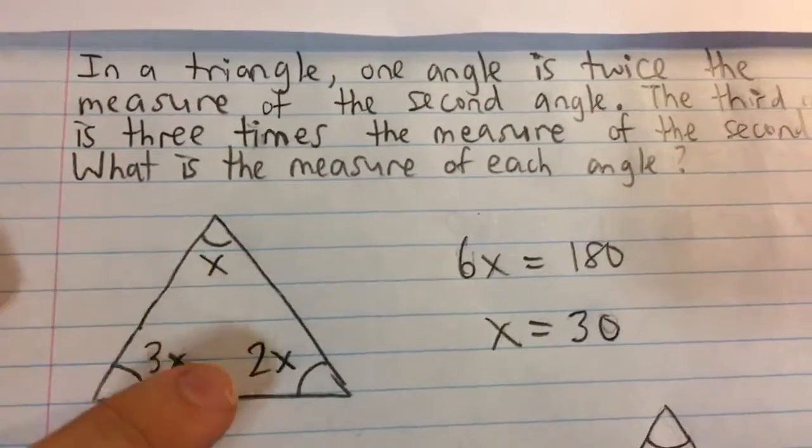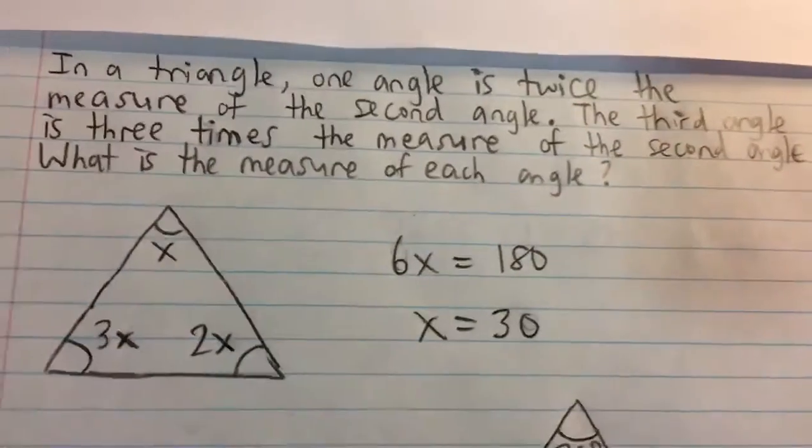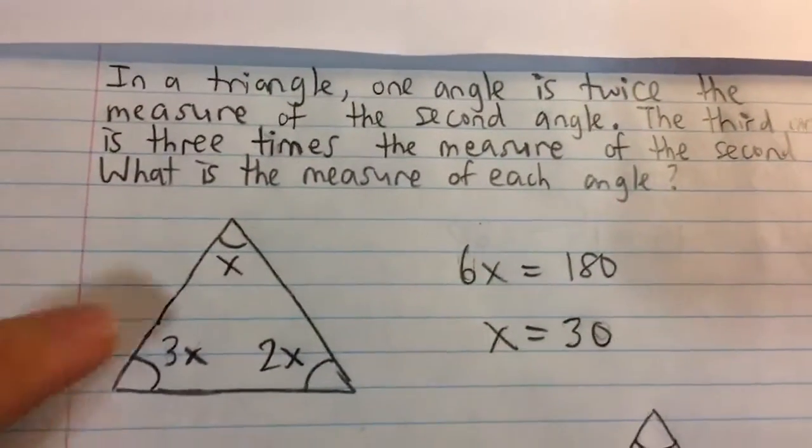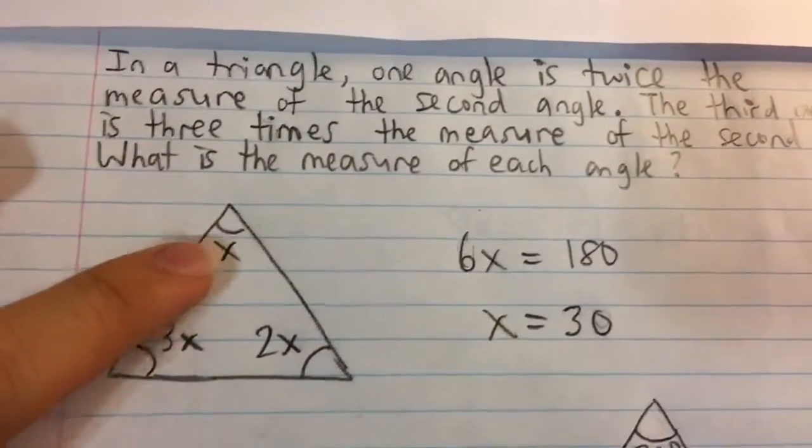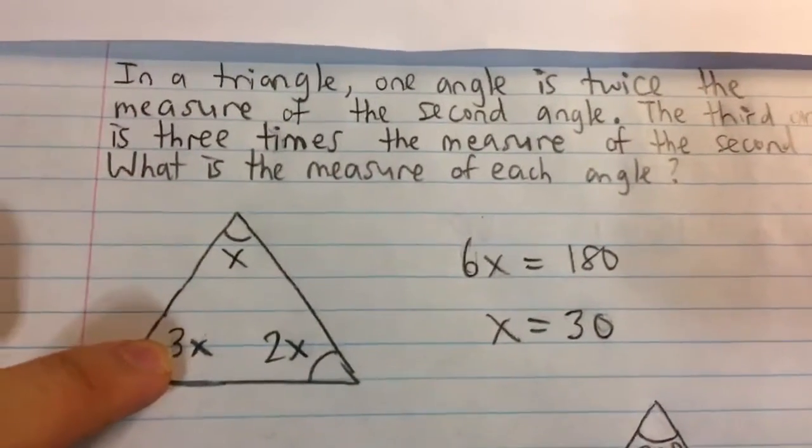Then the one angle will be two times x, twice the measure. And the third angle is three times the measure of the second angle, and this is our quote unquote second angle, and so it's three times that, or 3x.